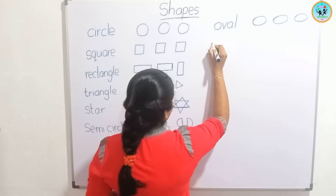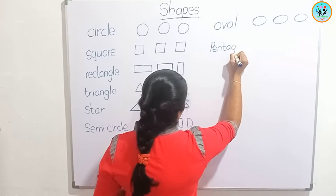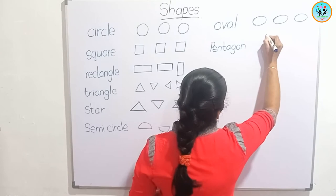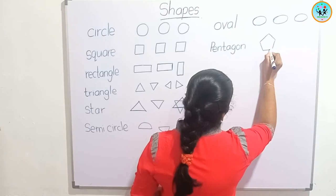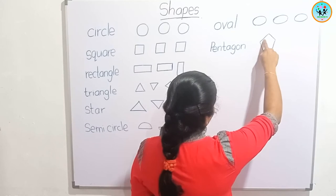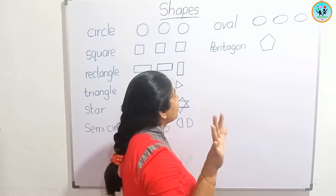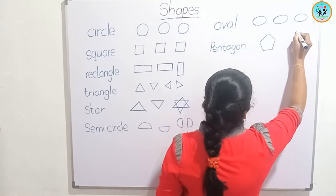Next we will draw a pentagon. Look at this picture. Shall we count the sides of this pentagon? One, two, three, four, five. Five sides are in a pentagon. The five sides are equal.